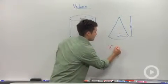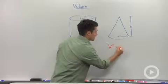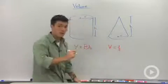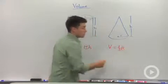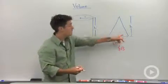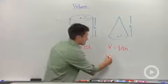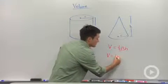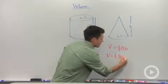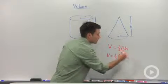So we can say that the volume of any cone is equal to one-third times the base area, which is going to be pi r squared since the base of a cone is a circle, times the height. So I could rewrite this in terms of a radius: one-third pi r squared times H.